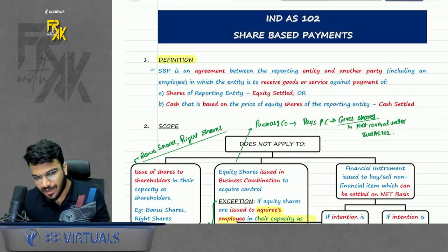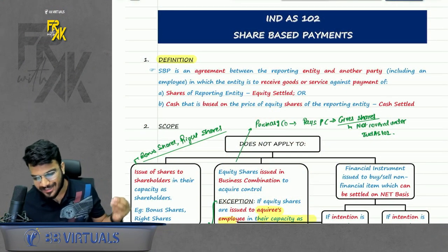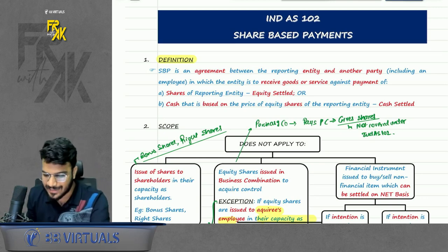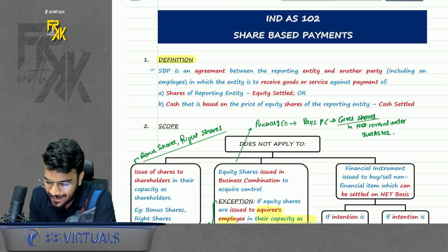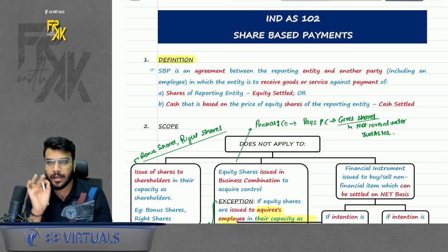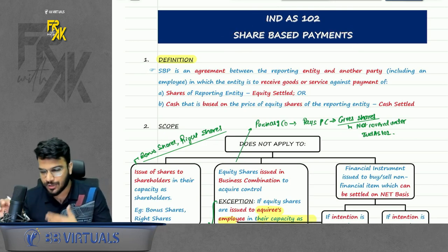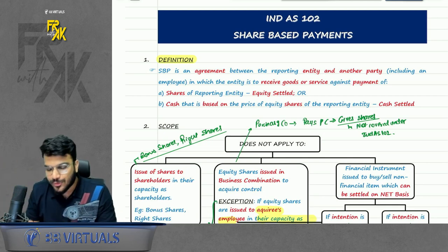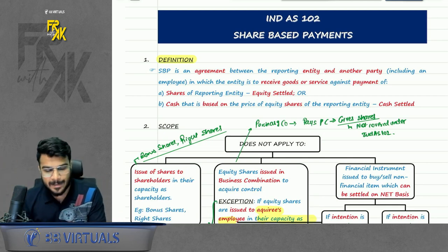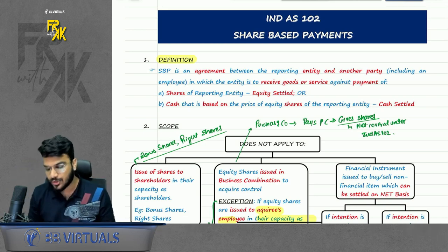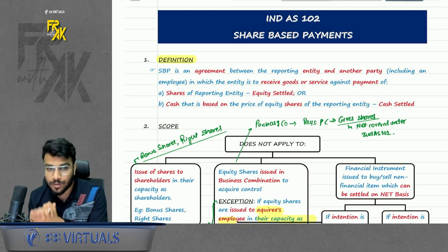Welcome everyone to another revision session on CA Final Financial Reporting. In this video we are going to revise Index 102, that is Share Based Payment — a very scoring index. This is going to be a 100% English revision lecture for South India students. We will revise all the concepts along with important questions.